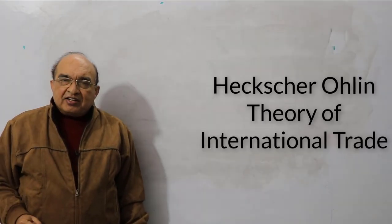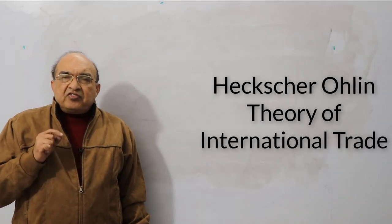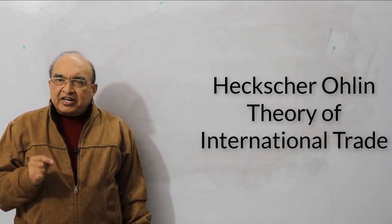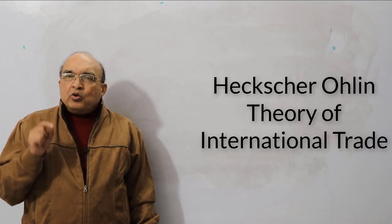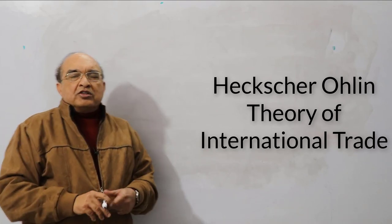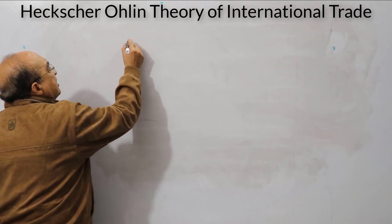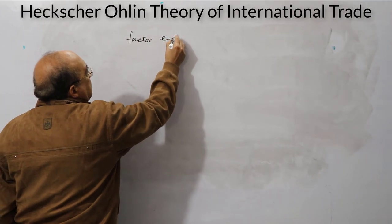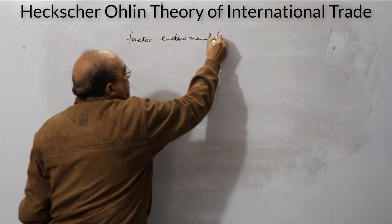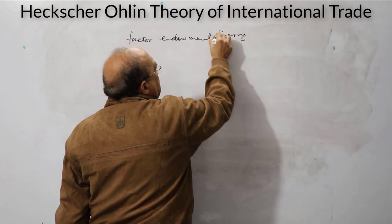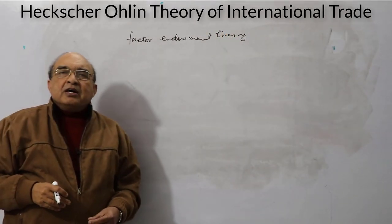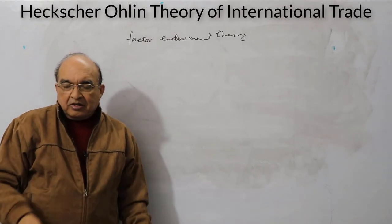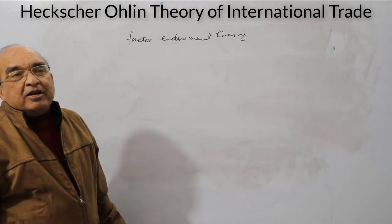Hello and welcome to EZ Classes. In this video we will discuss one of the important theories of international trade, namely the Heckscher-Ohlin theory, also known as the factor endowment theory, because it is based on the endowment of factors — which country is endowed with what factor in abundance — that becomes the basis for international trade.